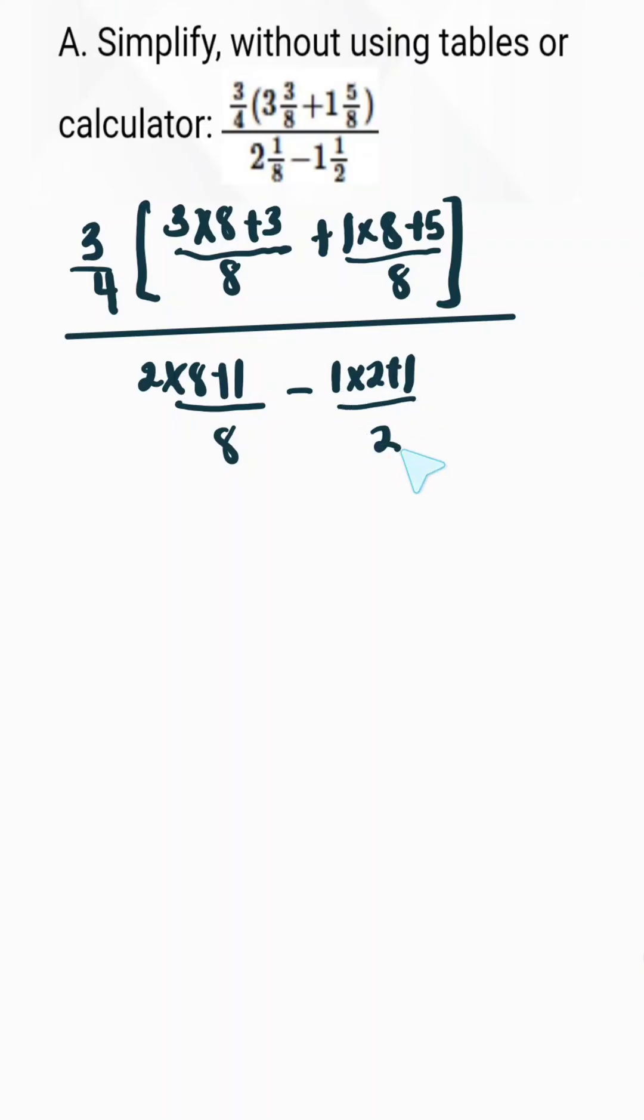Now to proceed, here we have 3 times 8 which gives 24 plus 3 which gives 27. So we have 3 over 4, we have 27 over 8 plus 1 times 8 is 8 plus 5.